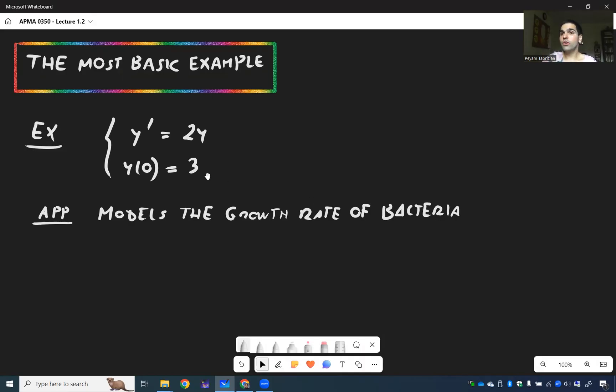And this y of 0 equals 3 means initially there are only 3 bacteria, within 3,000 or even 3 million. Now, I do want to say we will find a more efficient way of solving it, but let's just solve it using first principles.